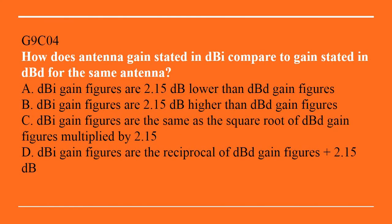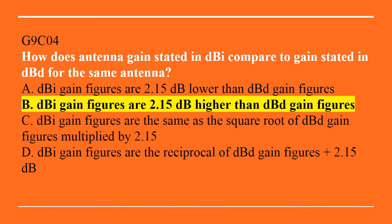G9C04: How does the antenna gain stated in dBi compare to gain stated in dBd for the same antenna? A. dBi gain figures are 2.15 dB lower than dBd gain figures. B. dBi gain figures are 2.15 dB higher than dBd gain figures. C. dBi gain figures are the same as the square root of the dBd gain figures multiplied by 2.15. Or D. dBi gain figures are the reciprocal of the dBd gain figures plus 2.15 dB. The correct answer is B — dBi gain figures are 2.15 dB higher than dBd gain figures.